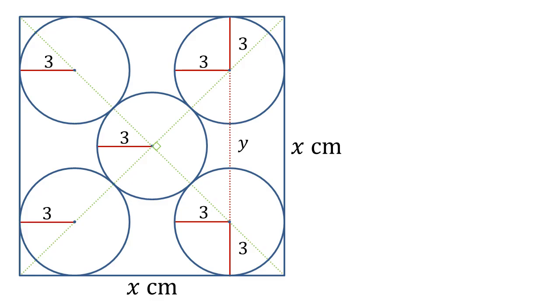It's going to be important for what we do next. We've now created a right angle triangle in the center there, where the hypotenuse is y, and we can work out the other two sides because each of them is just two radii of the circles, so each of them must be 6 in length.